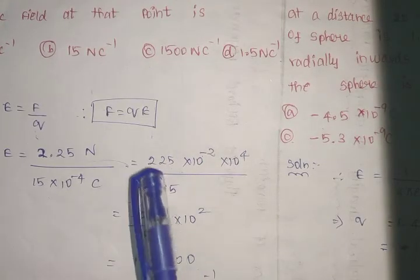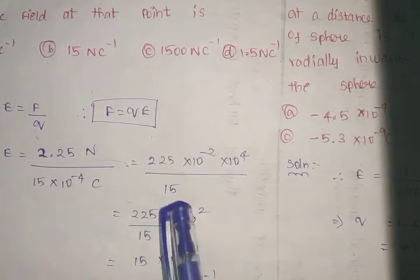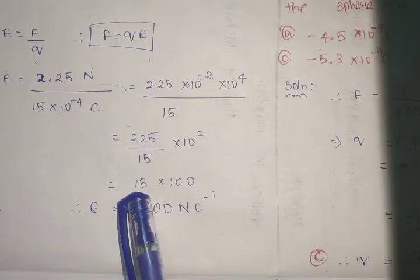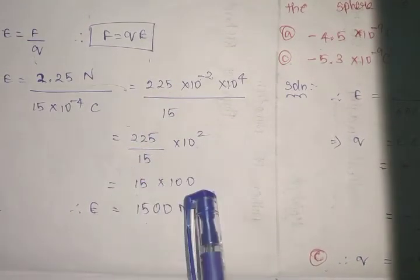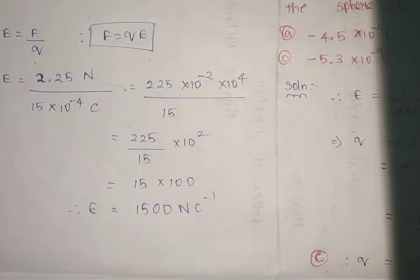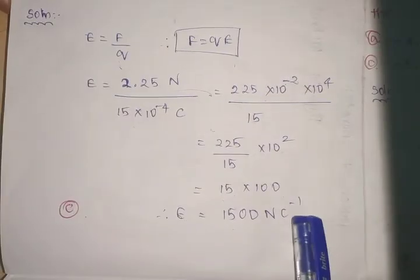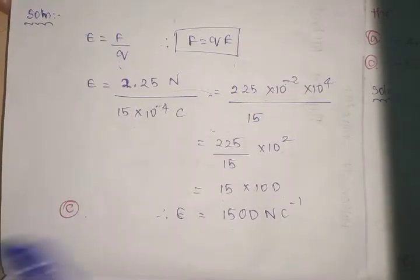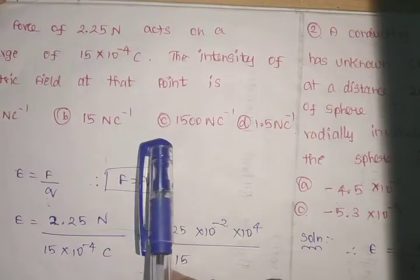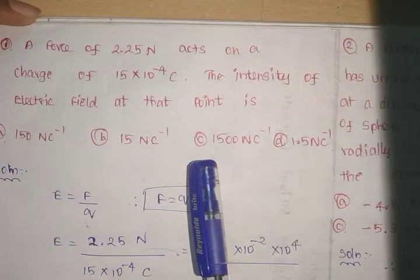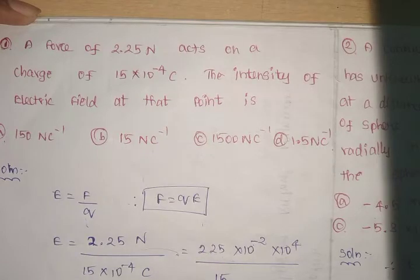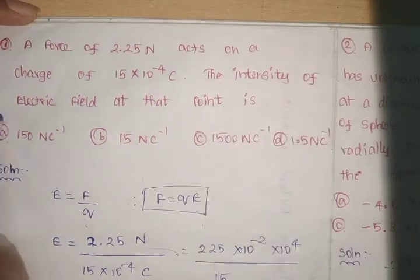225 and 15 will get cancelled with each other, we get 15. So 15 × 100 which is 1500 Newton per Coulomb. So the relevant option is C. Absolutely, the option is correct: C, 1500 Newton per Coulomb for the intensity of electric field.